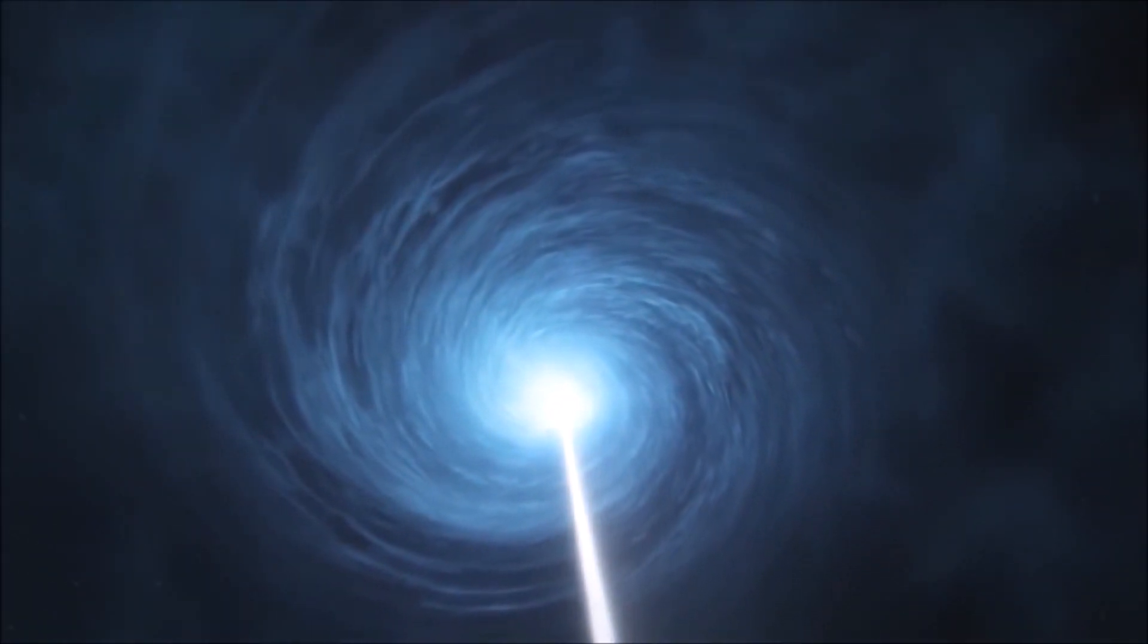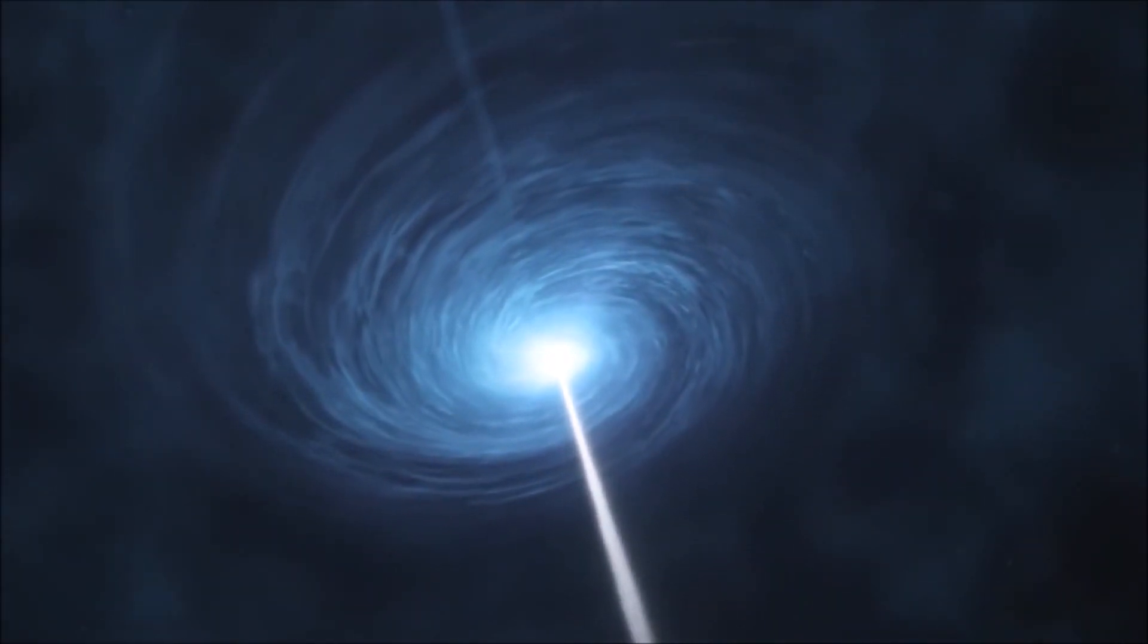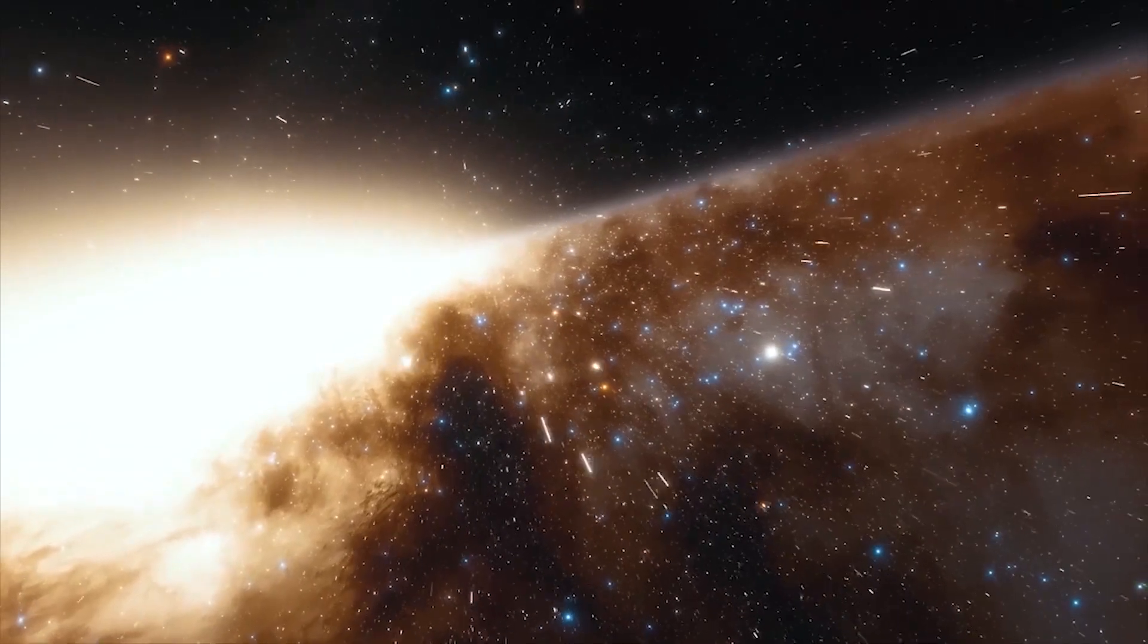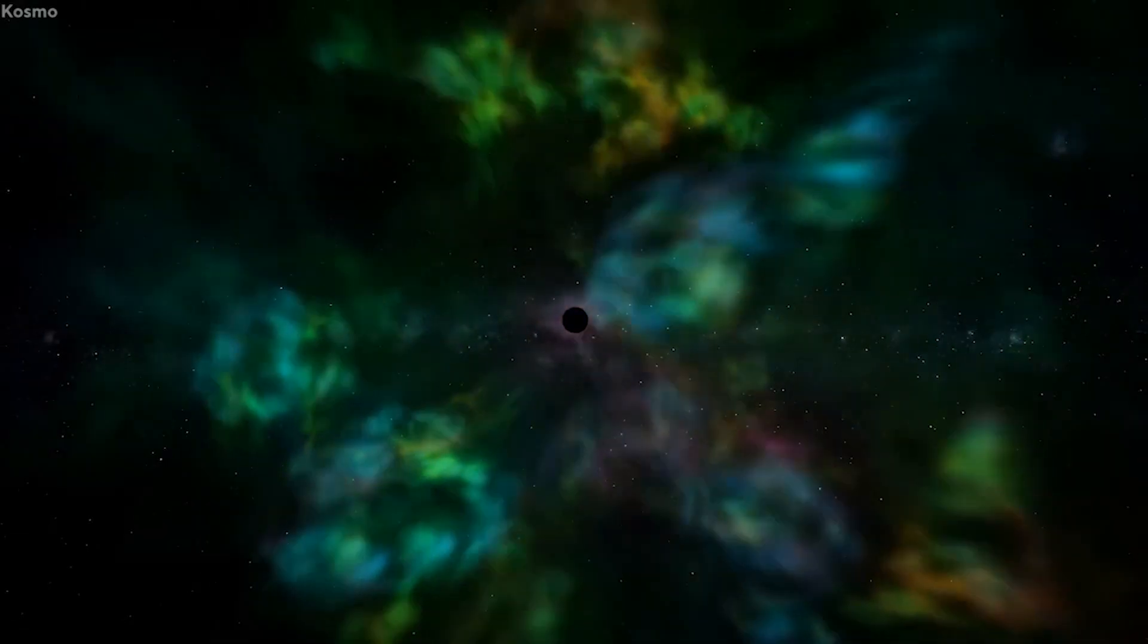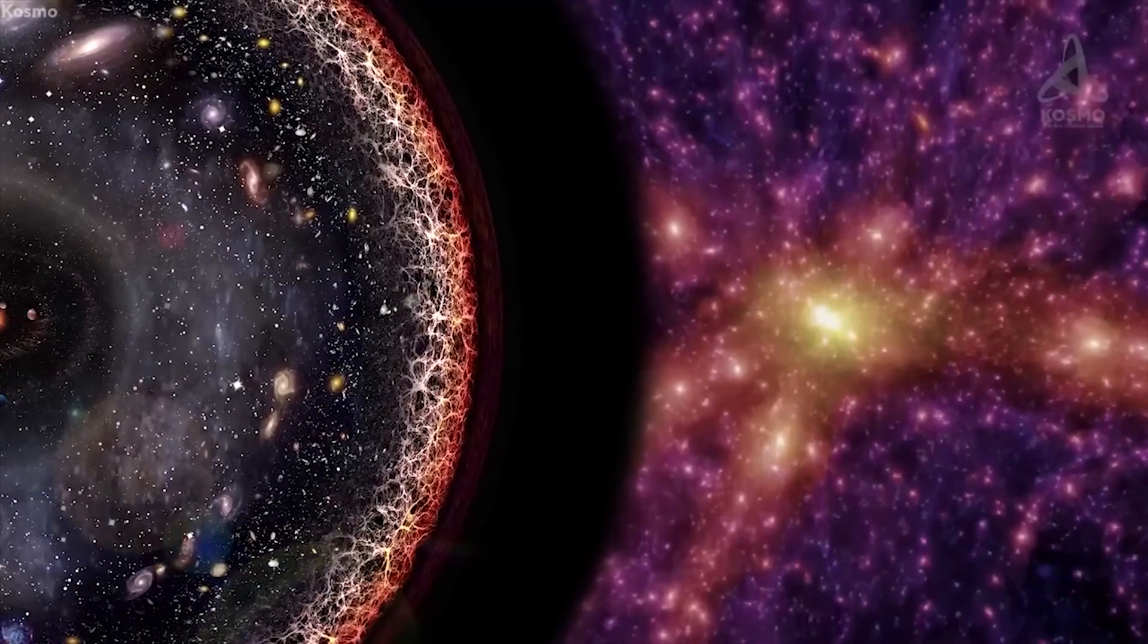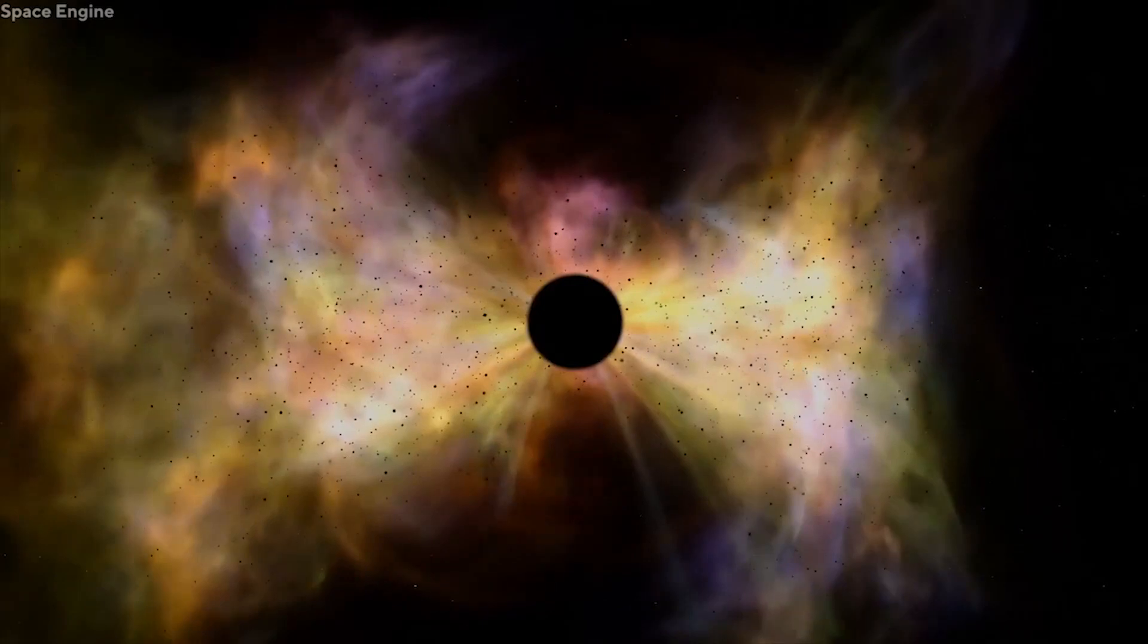The immense power and energy released by TON 618's accretion disk not only have an impact on the immediate vicinity but also shape the galactic environment around it. The energy and radiation from the black hole can influence the formation of new stars, trigger the collapse of gas clouds, and even disrupt the stability of the surrounding galaxy.